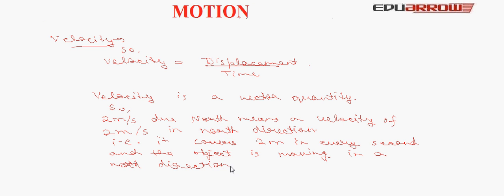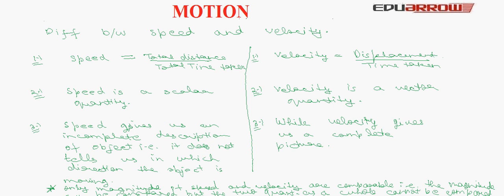Now let us understand the very important difference between speed and velocity. Speed is actually total distance upon total time taken, while velocity is displacement upon time taken. Speed is a scalar quantity — it has only magnitude and no direction — but velocity is a vector quantity, that is it has both magnitude and direction. Speed gives us an incomplete description of the object, as it does not tell us in which direction the object is moving, while velocity gives us a complete picture — it tells us whether the object is moving in the north direction, south direction, or at an angle.